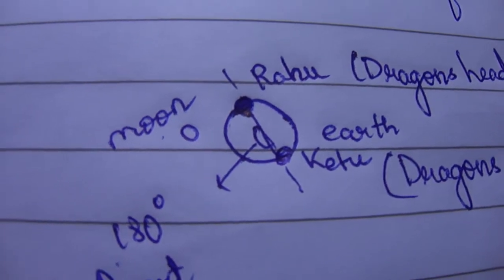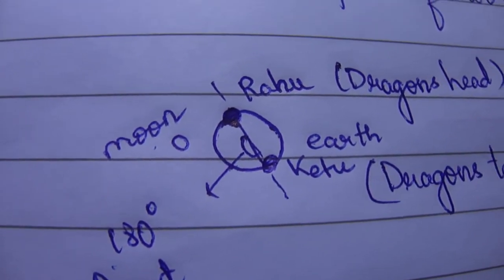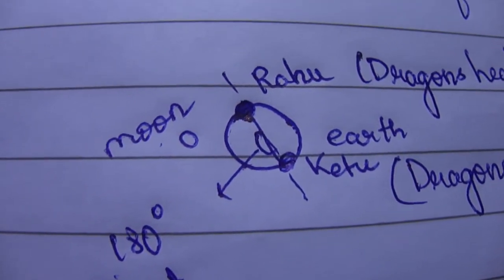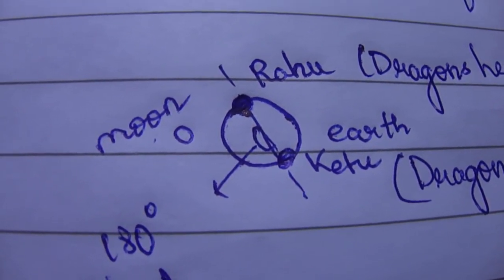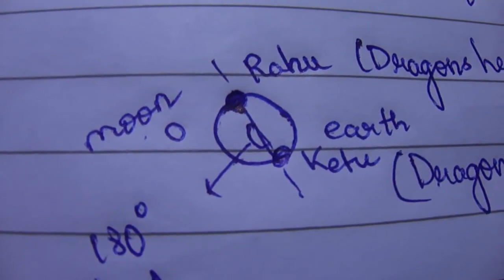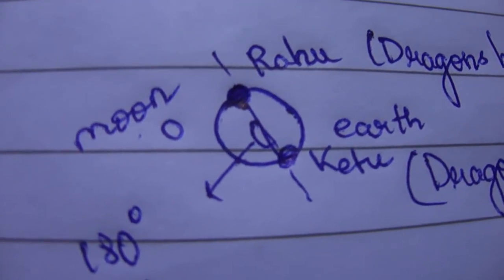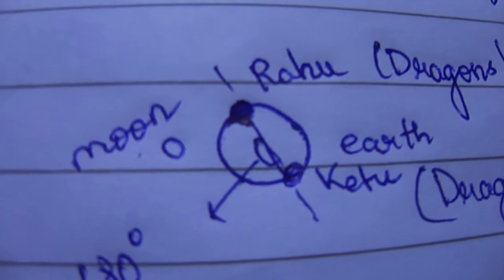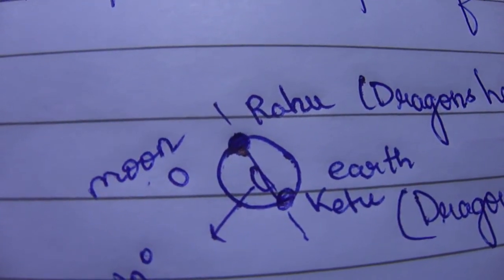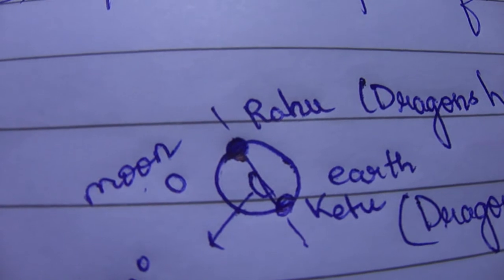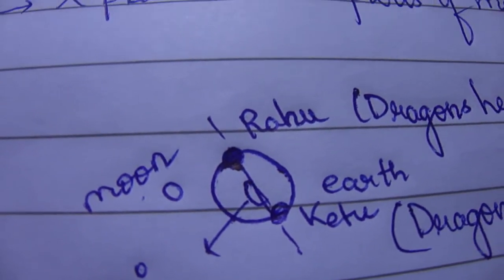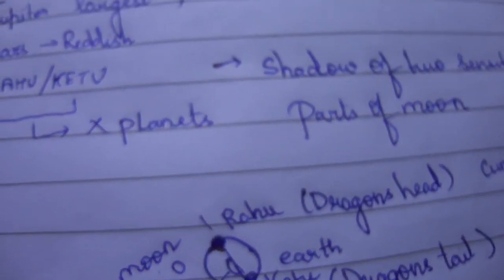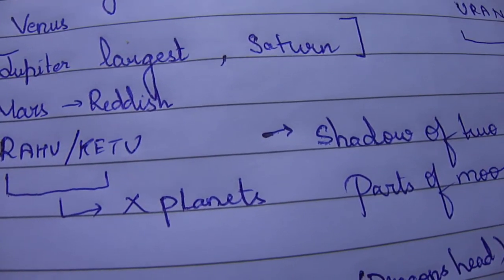Rahu and Ketu are shadow planets, just points on Earth where the Moon crosses the northern and southern points. We also understood that Saturn and Jupiter influence most of us, whereas Uranus, Neptune, and Pluto are not considered in Vedic astrology.